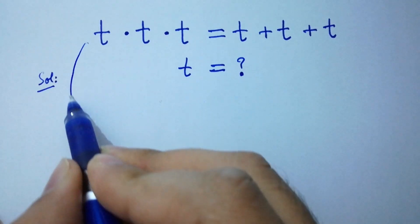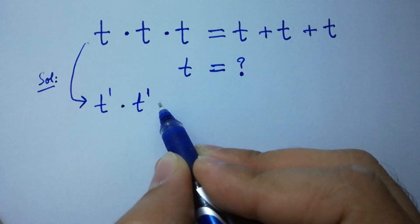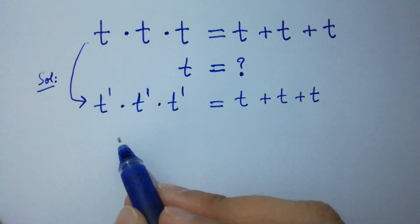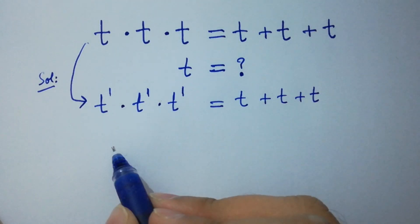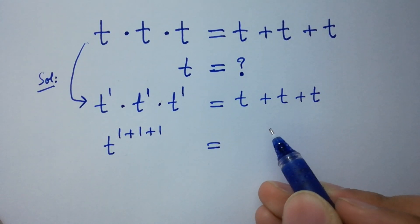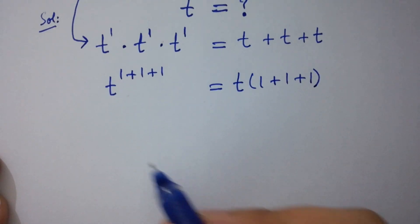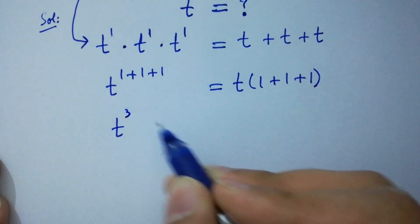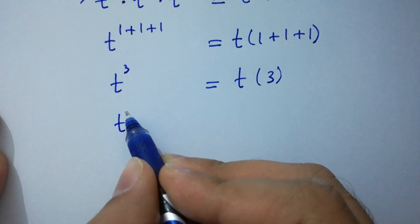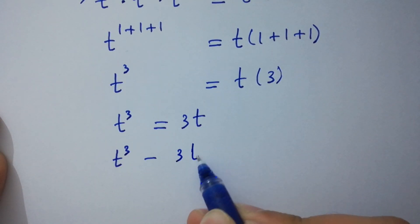This question is the same as t to the power 1 times t to the power 1 times t to the power 1 equal to t plus t plus t. On the left hand side the base is the same, so we add the powers: t to the power 1 plus 1 plus 1. On the right hand side, t can be factored out, giving 1 plus 1 plus 1, so t to the power 3 equals 3t.